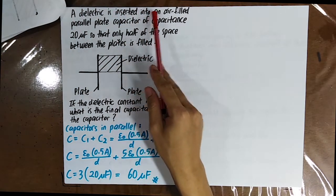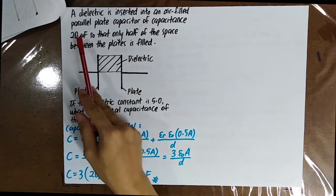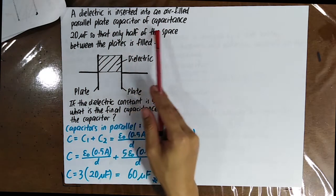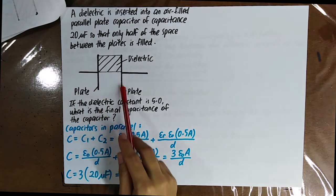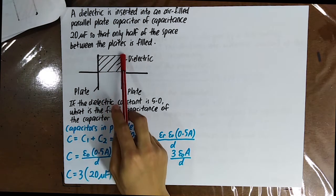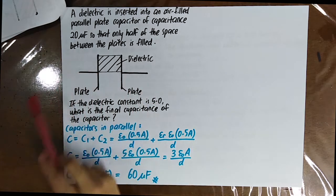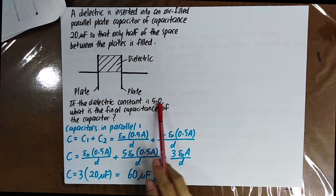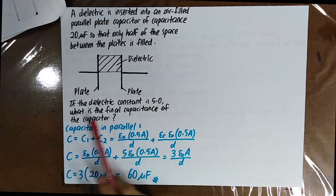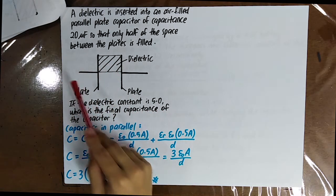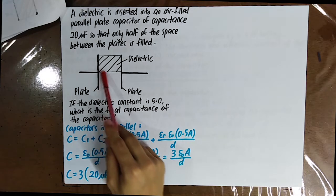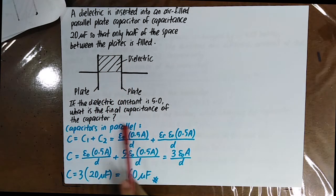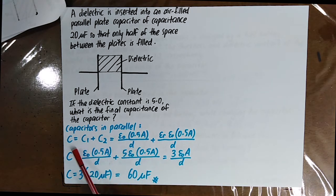A dielectric is inserted into an air-filled parallel plate capacitor of capacitance 20 µF so that only half the space between the plates is filled. Since you can choose to walk this path (through the dielectric) or that path (through the air), the two halves are connected in parallel. Since the capacitors are in parallel, you use the parallel formula to find the equivalent capacitance. With dielectric constant equal to 5, you can calculate the final capacitance.